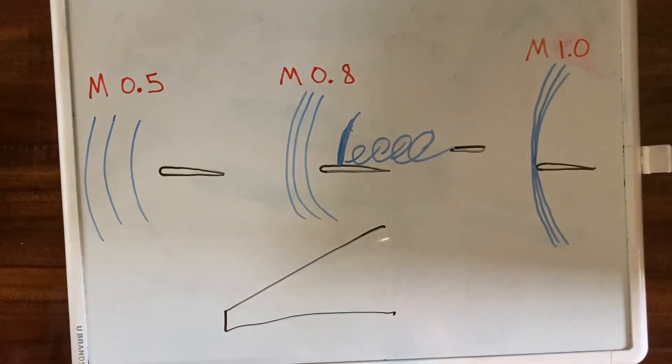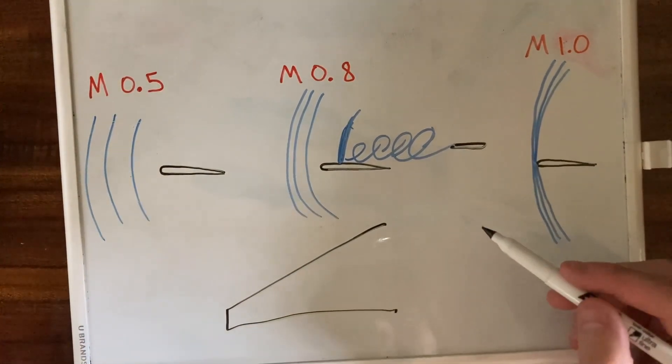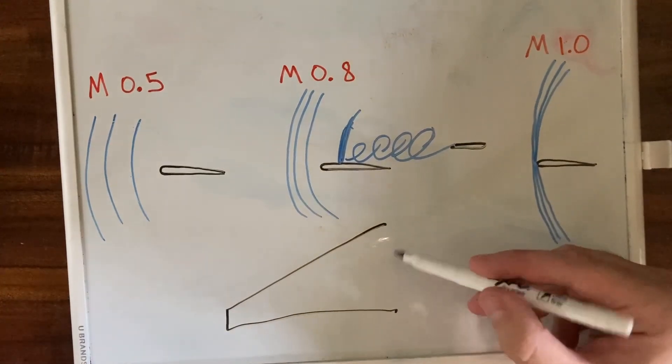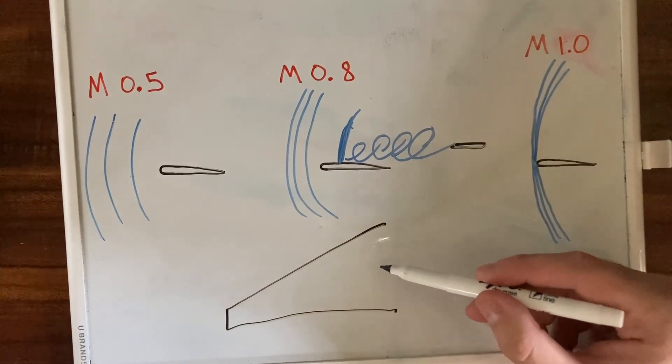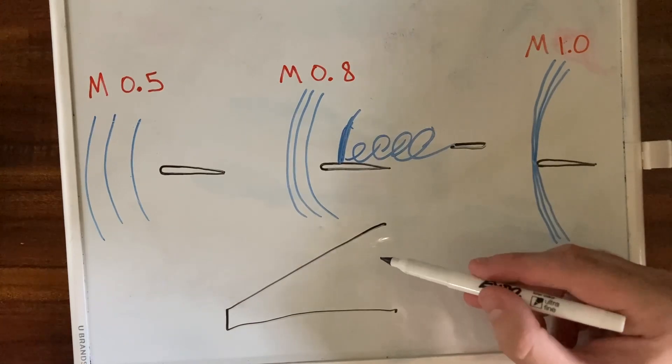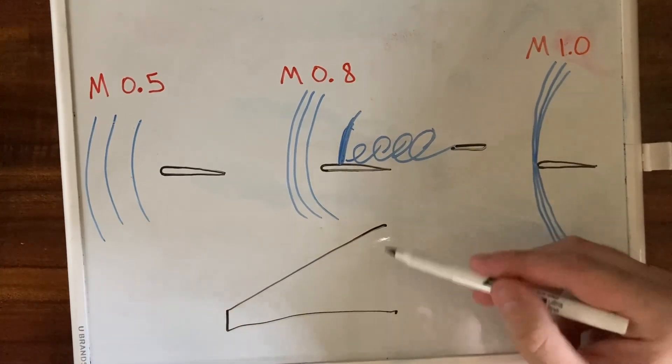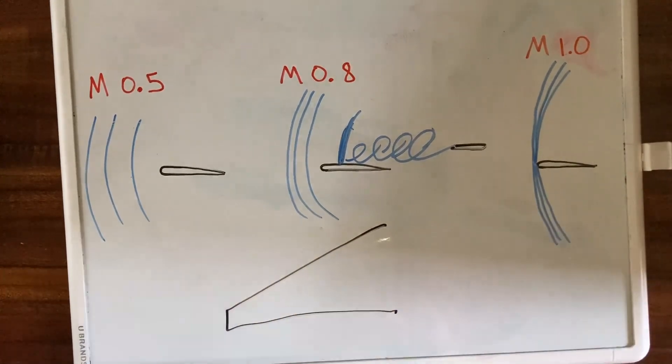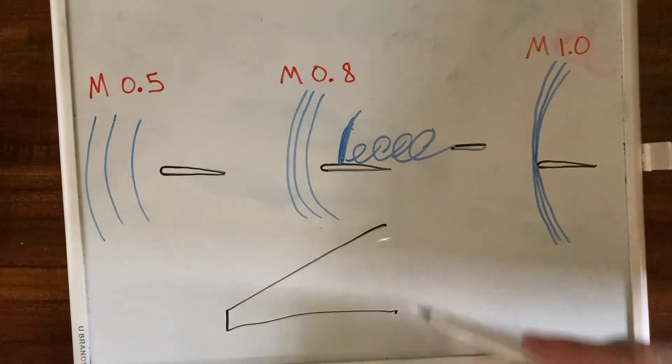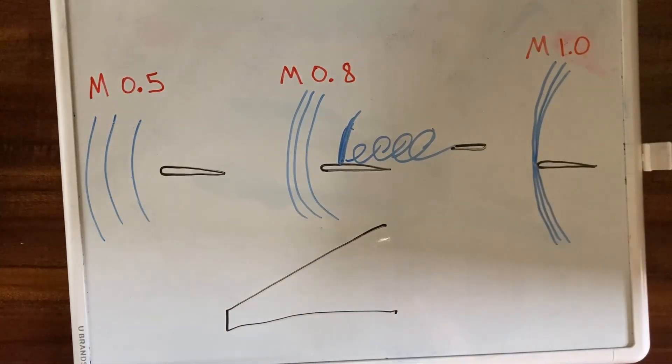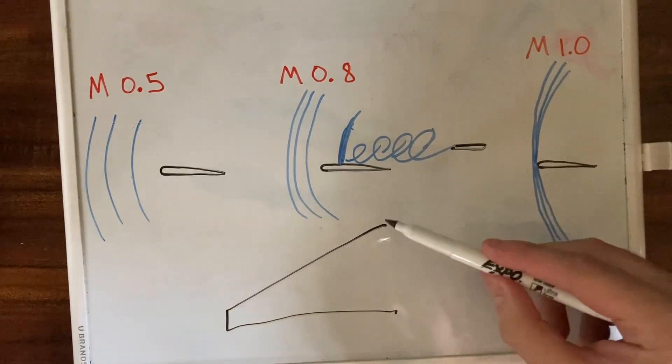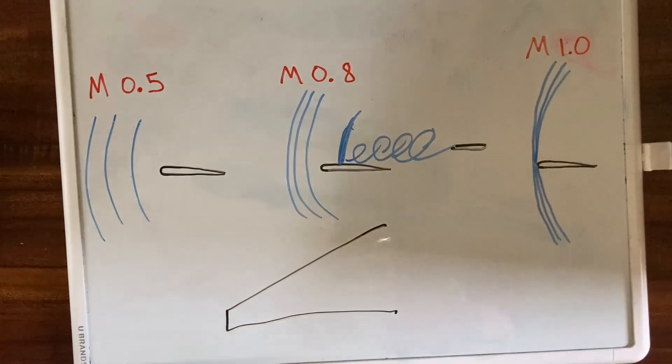If I have a swept wing like that, a swept wing on a transport category aircraft, a jet aircraft, usually is thicker and more cambered at the wing root here. That creates a greater acceleration of air over the wing.